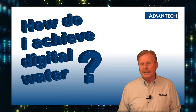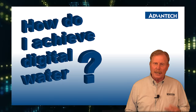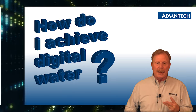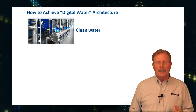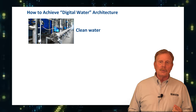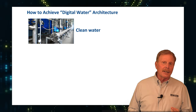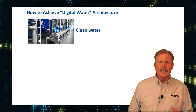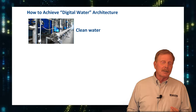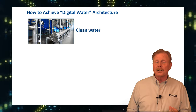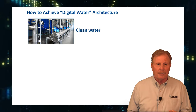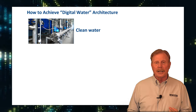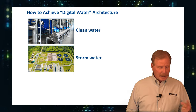When we talk about digital water, it actually centers around three main areas. The first is clean water, which includes both inside the fence in the water treatment plants, and also outside the fence in the distribution chain of being able to get clean, healthy water to the end customer.